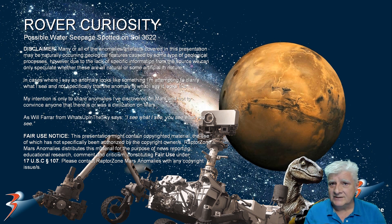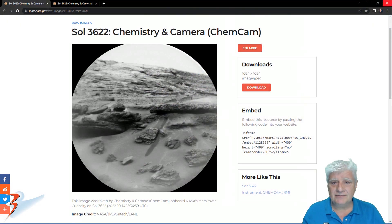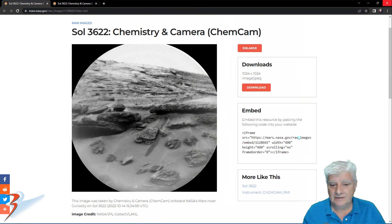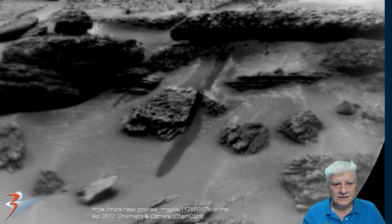These two photographs were acquired on the 14th of October 2022 on Sol 3622. Here's the first photograph acquired by the Chemistry and Camera, or ChemCam, and we'll be zooming in on that dark patch. You can already see it — it sticks out like a sore finger. So let's zoom in on that spot and take a closer look.